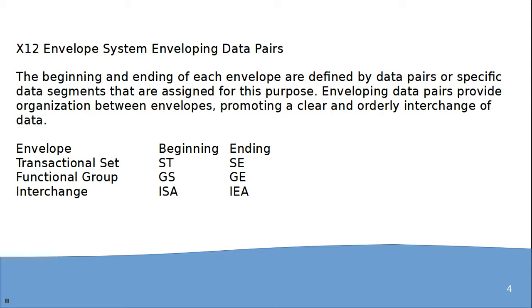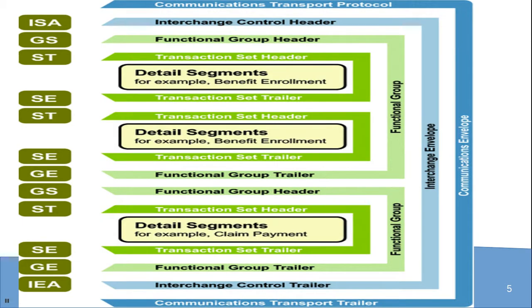The envelope structure defines starting and ending markers. The transaction set envelope starts with ST and ends with SE. The functional group envelope starts with GS and ends with GE. The interchange envelope starts with ISA and ends with IEA. ISA represents the interchange control header and IEA the interchange control trailer.